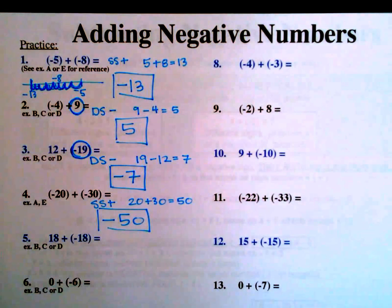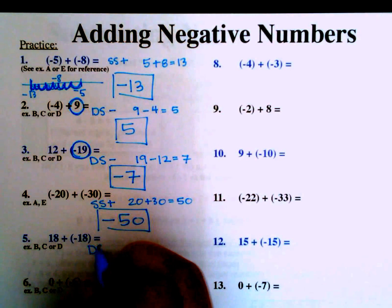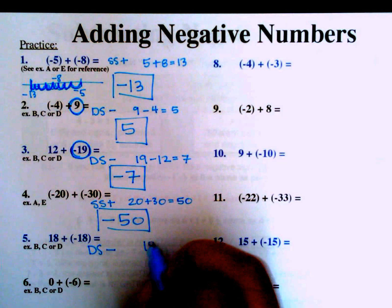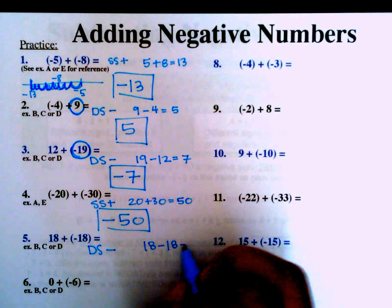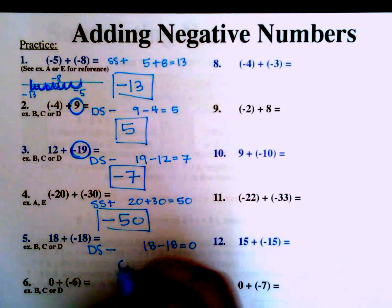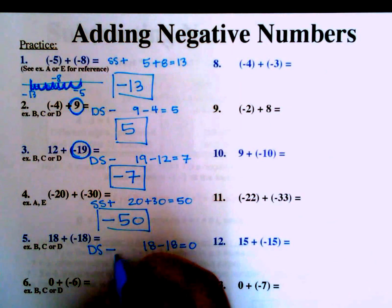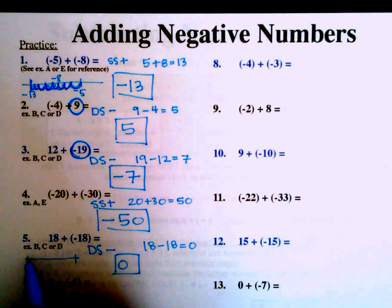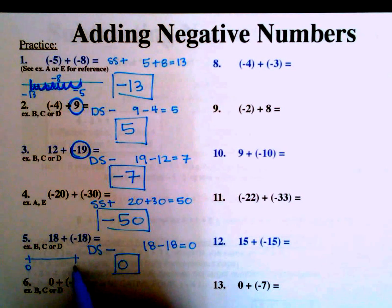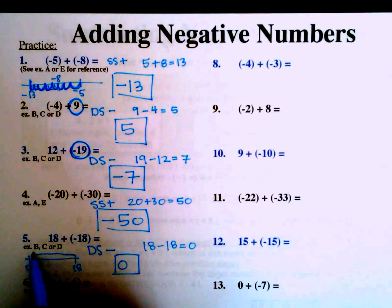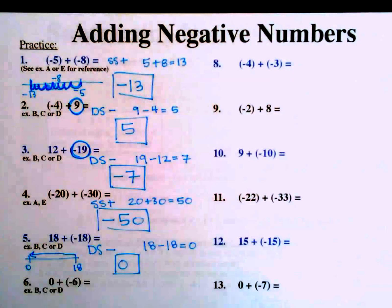Number 5: 18 plus negative 18. Different signs, so we subtract: 18 minus 18 equals 0. The answer is 0. It makes sense — on a number line, if we're at 18 and add a negative 18, we go back 18 spaces and land right back at 0.